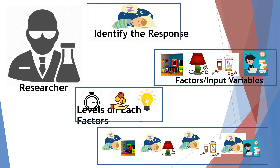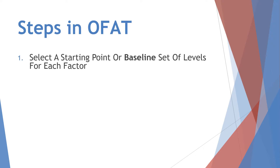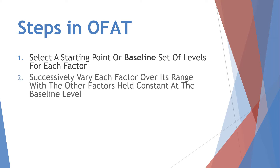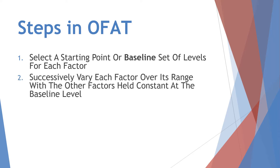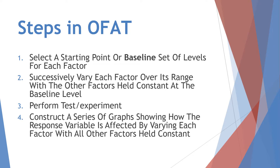So generally, the steps in conducting OFAT are: first, selecting a starting point or baseline set of levels for each factor; second, successively varying each factor over its range while other factors are held constant at the baseline level; third, perform the experiment; and fourth, construct a series of graphs showing how the response variable is affected by each factor with all other factors held constant.